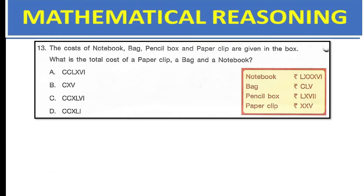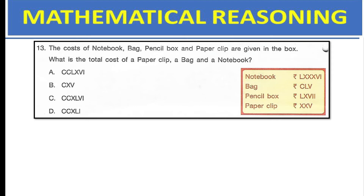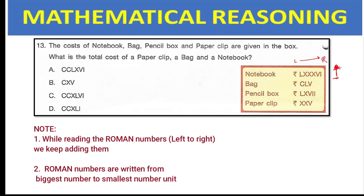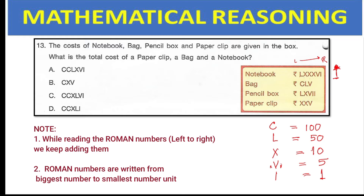The next question involves Roman numbers. Some basic rules: read from left to right, adding numbers as you go, always starting with the biggest number. C is 100, L is 50, X is 10, V is 5, and I is 1. If I comes before V, it means 5 minus 1 (4); if it comes after V, it means 5 plus 1 (6). Remember this rule.